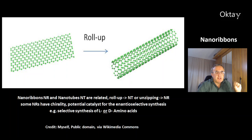Nanoribbons and nanotubes are related. If you roll up a nanoribbon, you get a nanotube. Conversely, nanotubes can be unzipped to get a nanoribbon. Like nanotubes, some nanoribbons have chirality.